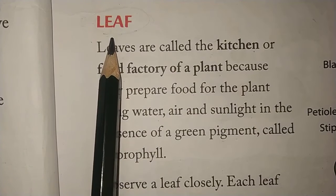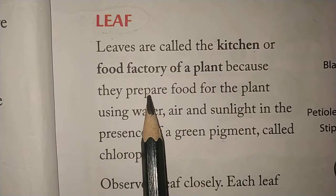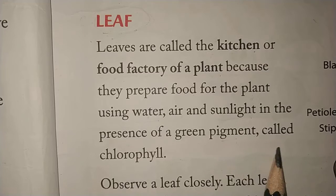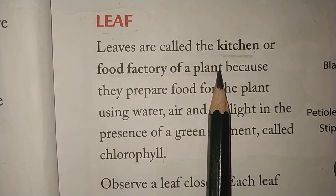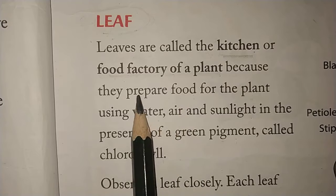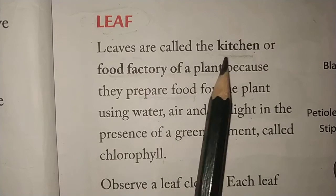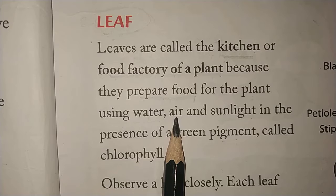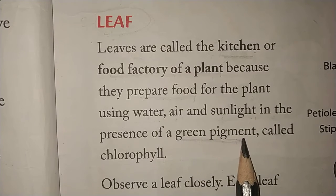Leaves are called the kitchen or food factory of the plant because they prepare food for the plant using water, air and sunlight in the presence of a green pigment called chlorophyll. We call leaves the food factory of plants, just like food is made in the kitchen of our house.